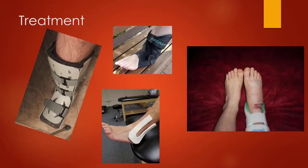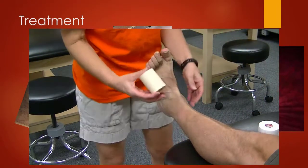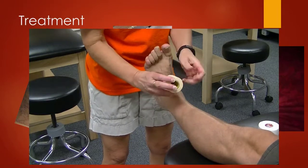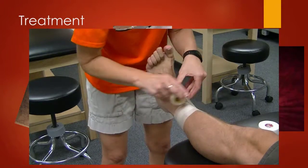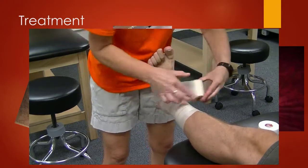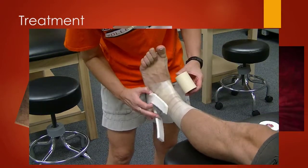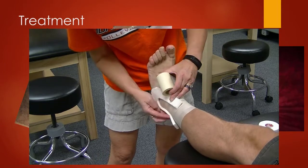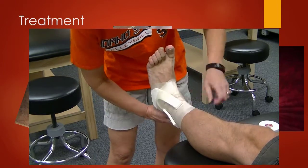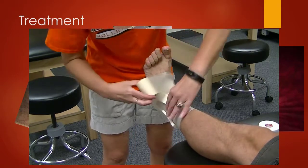Ankle sprains are treated differently depending on the type of sprain. We can use a felt horseshoe, which will help move the edema up the leg, keeping it out of the ankle and foot. We can use braces, and taping can also be done. You may not be aware of the open basket weave technique — with it, we create a place to direct the swelling so it's not ending up in the foot. A horseshoe is added, usually to the lateral part of the ankle where the sprain is, to help get that edema up the leg.